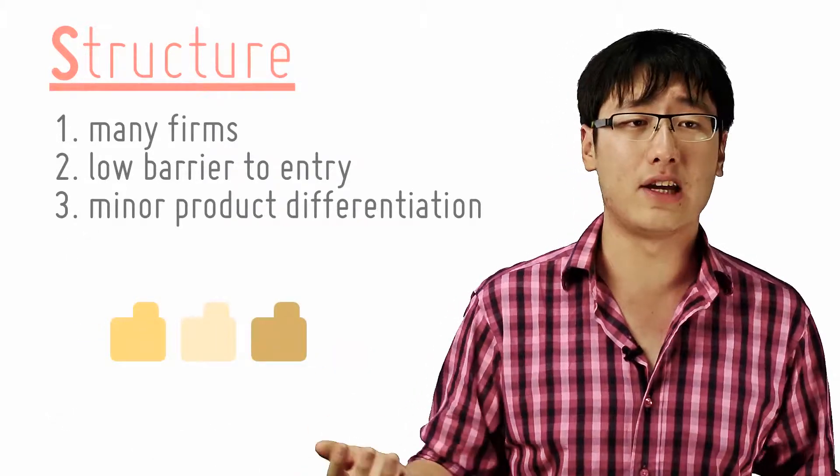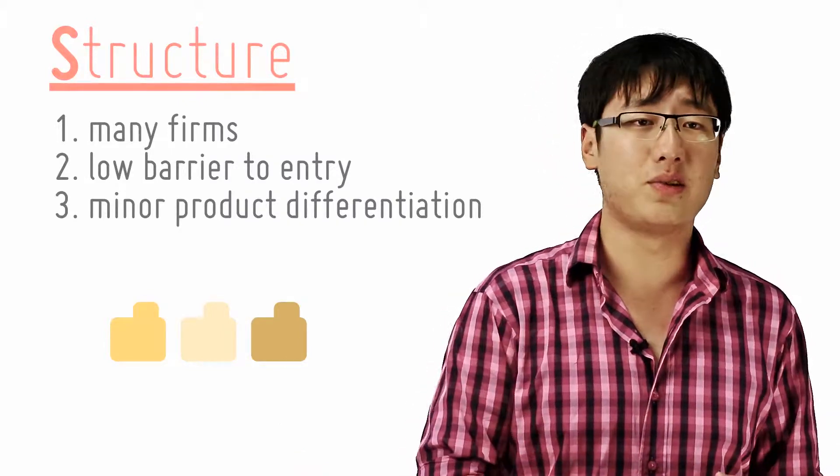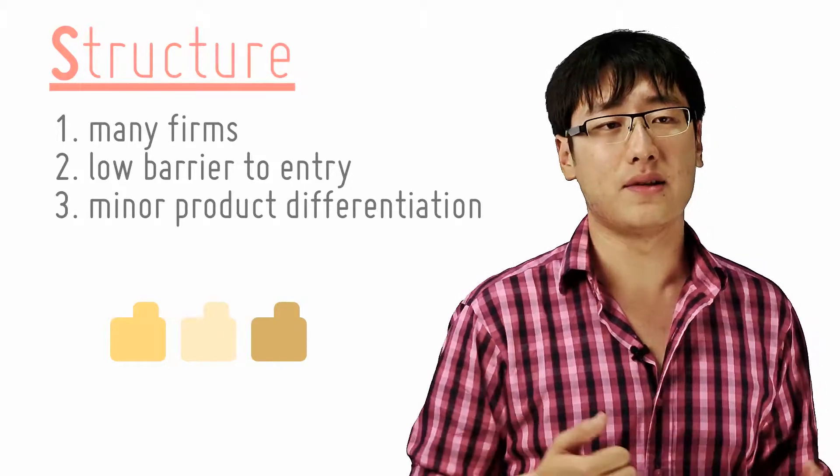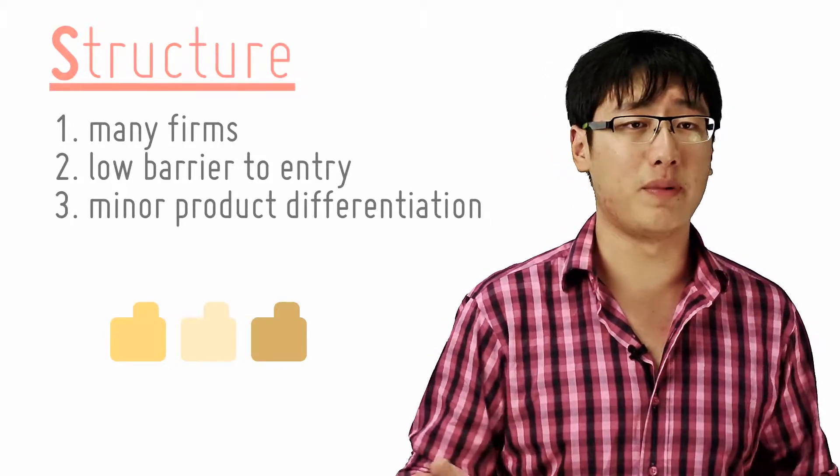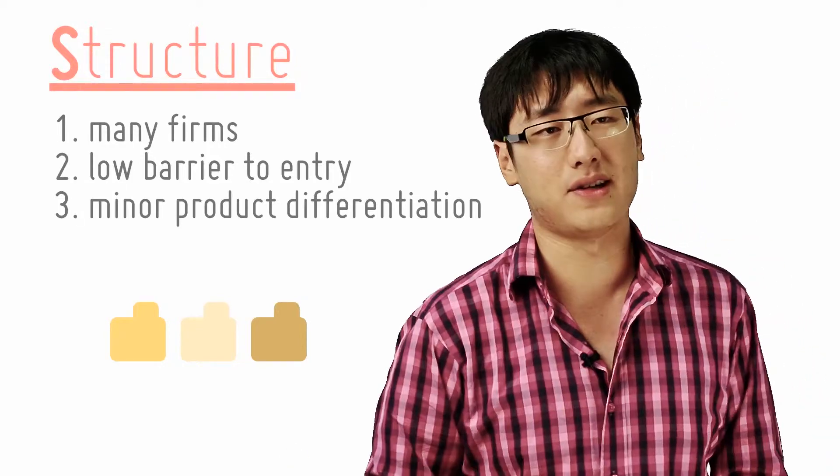This is known as product differentiation, very minute product differentiation where the firm innovates a little, provides goods that are a little different. So places like restaurants, hairdressers, and other builders, they are all examples of monopolistic competition. They sell largely the same product, but there are small differences every now and then.